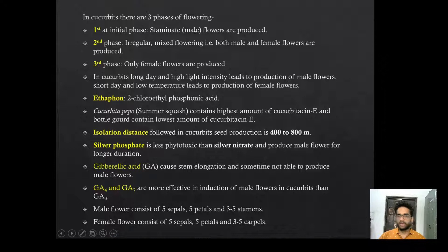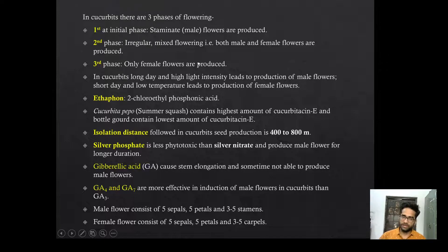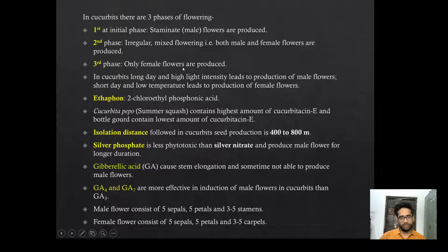In Cucurbits there are three phases of flowering. In the first initial phase there will be only male flower production. At the second phase there will be mixed flowering — both male and female flowers will be produced. At the third phase only female flowers will be produced. In Cucurbits, long day and high light intensity leads to production of male flowers, but in short day and low temperature conditions, female flowers are produced.